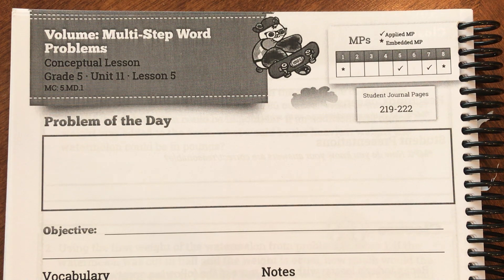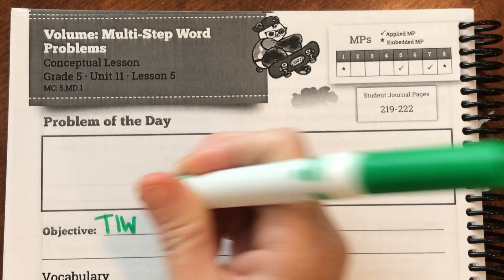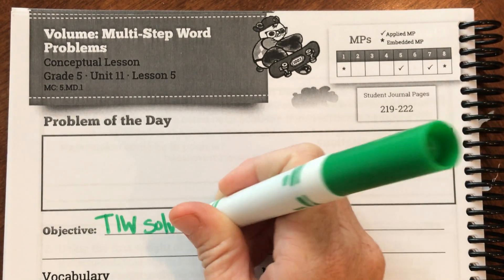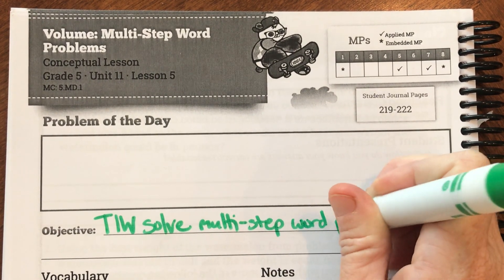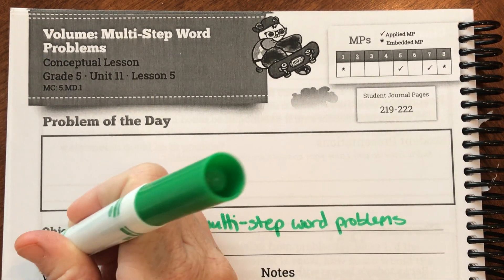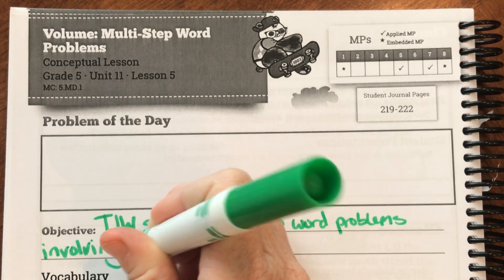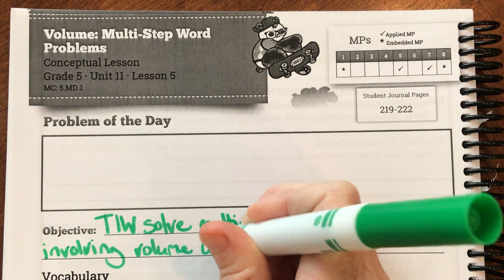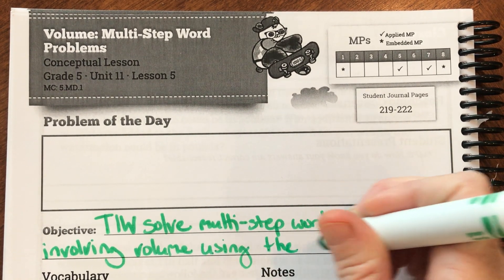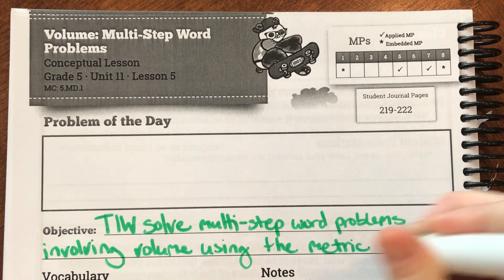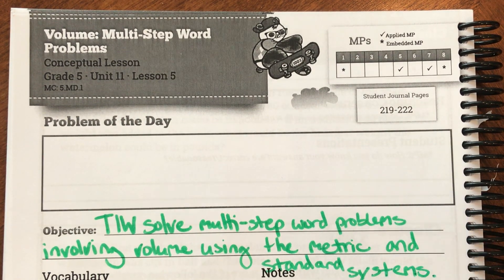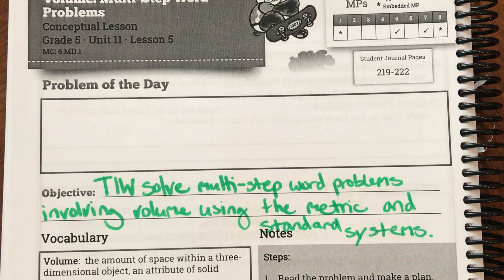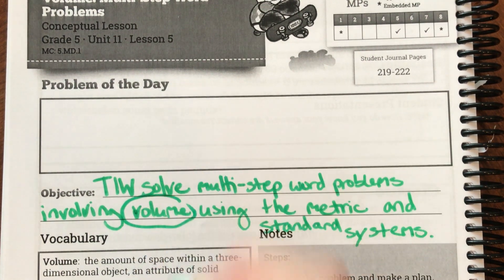Our goal or objective today is one of those long ones we've been seeing. It is: today I will solve multi-step word problems involving volume using the metric and standard systems. You probably need to stop your video to catch up on that long one. Everything we've seen for the last four lessons applies here, except this new word: volume.